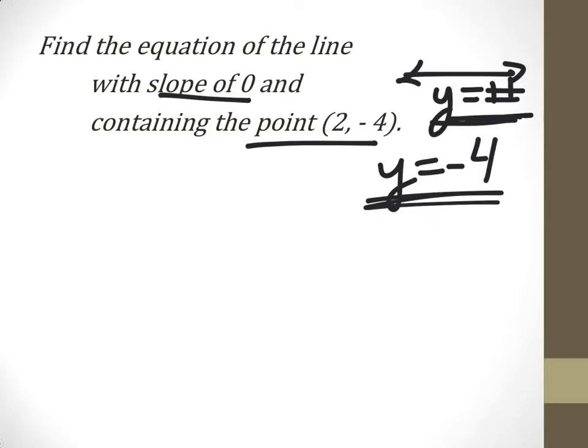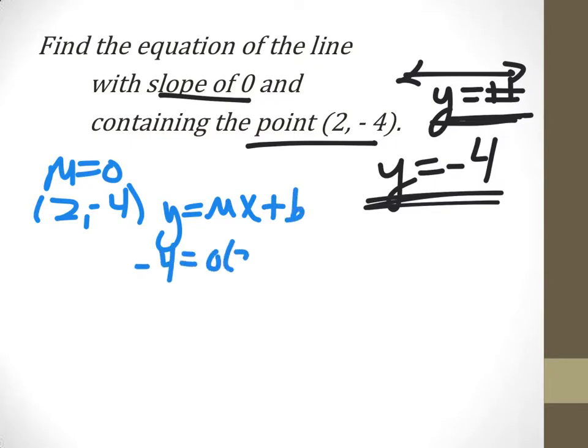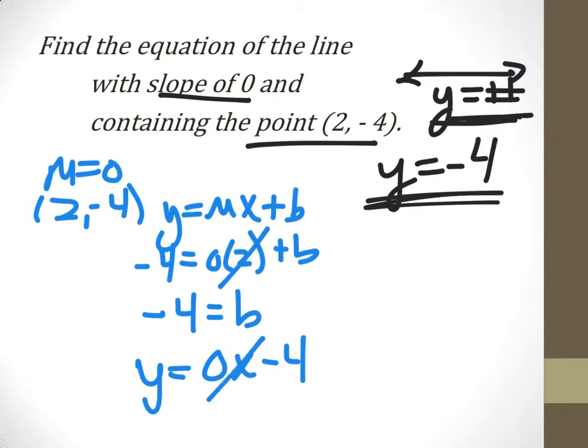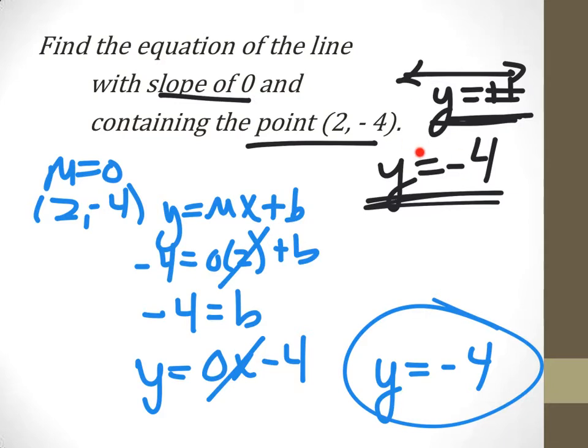Let's go ahead and do what we did before and show that it works the same either way. If we use m equals 0 and the point 2, negative 4 and substitute them in here, y is negative 4, slope is 0, x is 2. This term goes to 0, so b is negative 4. So then y equals 0 slope times x minus 4, but that term is 0, so you get y equals negative 4, and that's the exact same. So you can either think ahead and know that when it says slope of 0, it's horizontal, it's just y equals whatever number is here in this value. Or you can go ahead through the steps here and find it the exact same way.